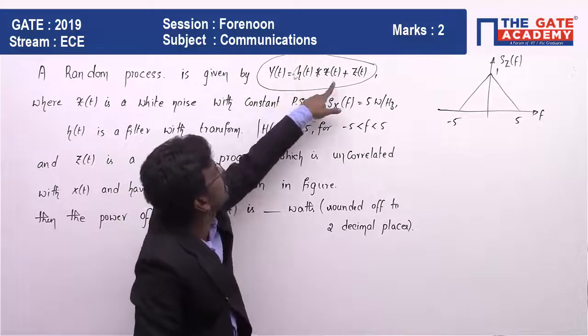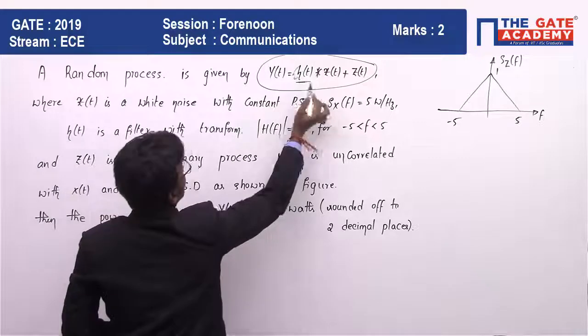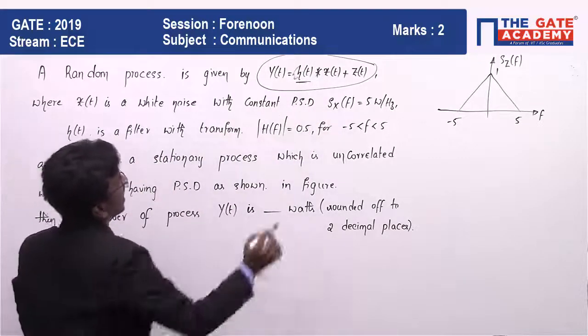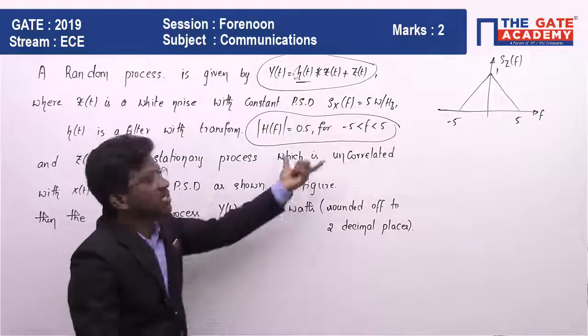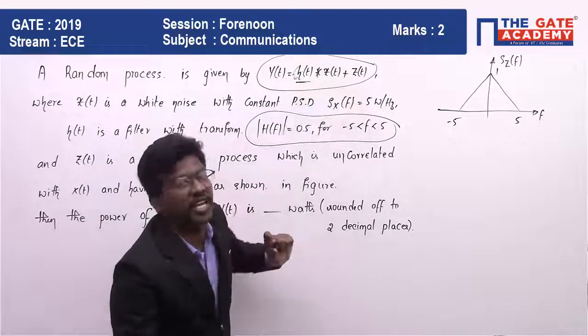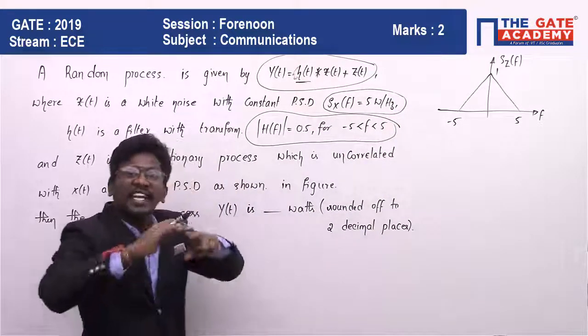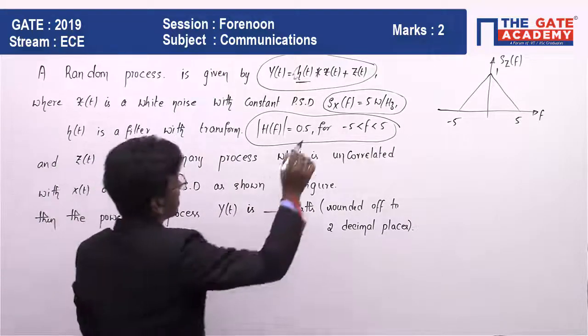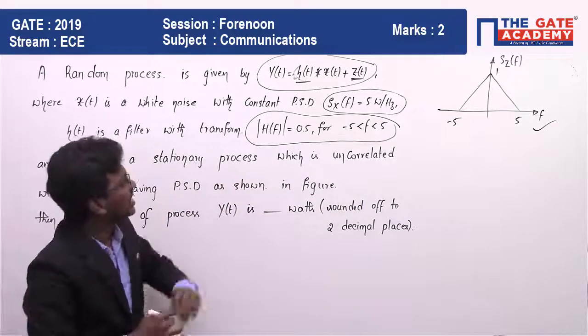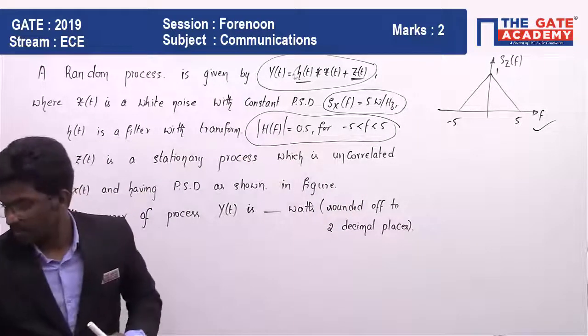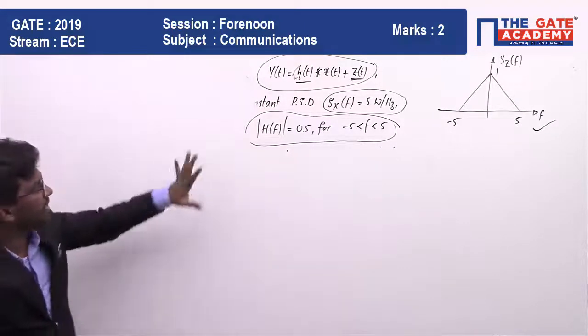This is the expression given for y(t). If you are able to find its power spectral density, area under it will give you power. It depends on h(t), x(t), and z(t). Regarding h(t), he has told it is a filter with transform of 0.5 for -5 to 5. Regarding x(t), the PSD is constant value 5. Regarding z(t), he has given this triangular PSD.